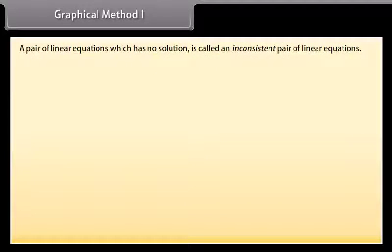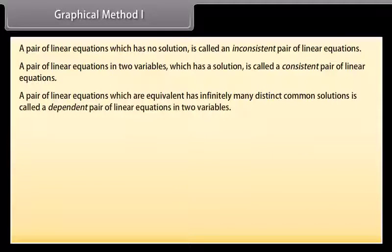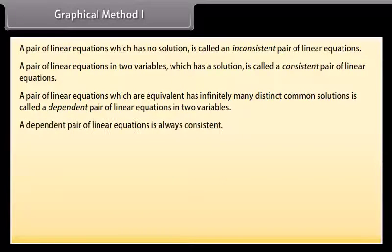A pair of linear equations which has no solution is called an inconsistent pair of linear equations. A pair which has a solution is called a consistent pair. A pair of linear equations which are equivalent and have infinitely many distinct common solutions is called a dependent pair of linear equations in two variables. A dependent pair of linear equations is always consistent.